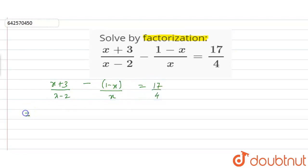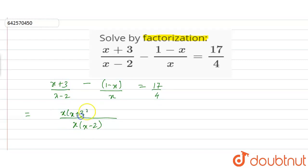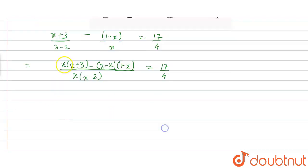Taking LCM as x(x - 2), we get: [x(x + 3) minus (x - 2)(1 - x)] upon x(x - 2) is equal to 17/4.